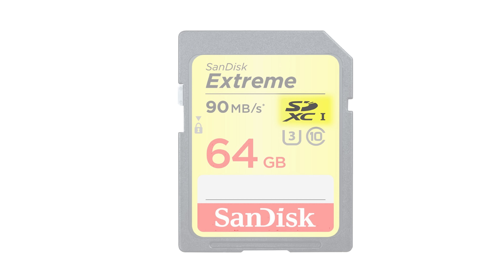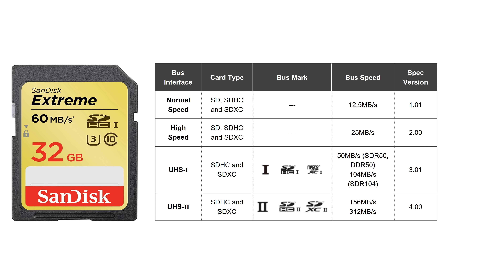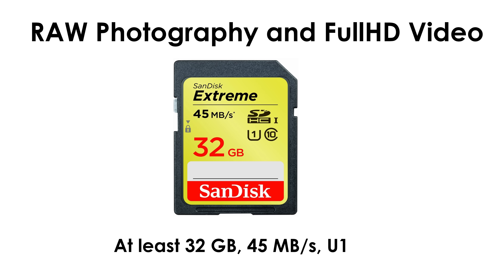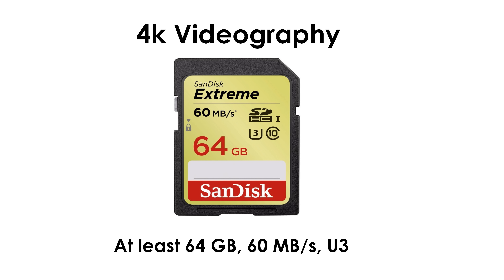Now about this last sign — it shows the bus interface, which is also about writing speed. The cards I own are all UHS-1, and most cards nowadays are. So as I said in the beginning: for JPEG photography, go with at least 16GB Class 10, 30MB per second. For RAW photography and Full HD videography, go with at least 32GB U1, 45MB per second. For 4K videography, go with at least 64GB U3, 60MB per second.